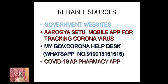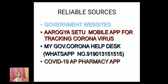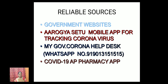In order to know the real facts or the real news about COVID-19, we have to rely on reliable sources like government websites, Aarogya Setu mobile app for tracking coronavirus, mygovernment.coronahelpdesk and its WhatsApp number, and also about the COVID-19 AP Pharmacy app.